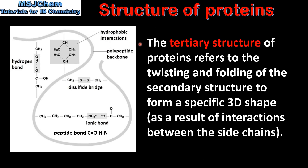The tertiary structure of proteins refers to the twisting and folding of the secondary structure to form a specific 3D shape. This is as a result of the interactions between the side chains of the amino acids. Here we can see the interactions between the side chains that give the protein its specific 3D shape.